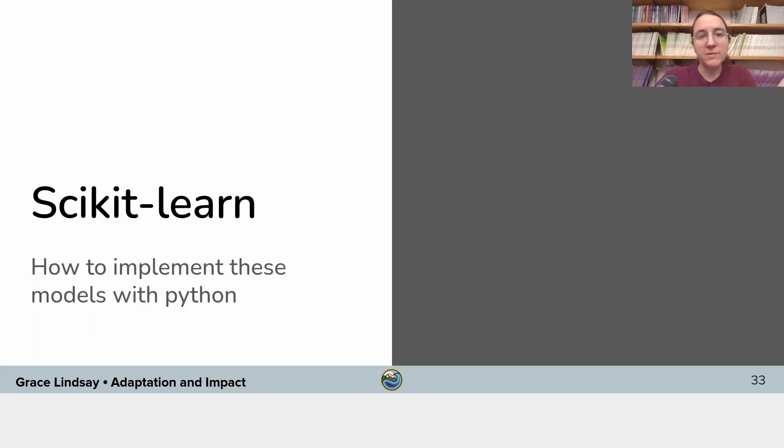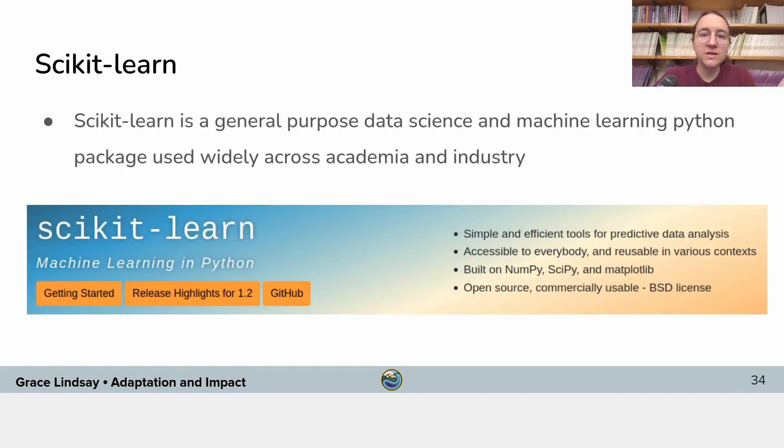So finally, we're going to talk about the practical details of how you're going to train these models. And that's using Scikit-learn. So Scikit-learn is a Python package that's widely used across academia and industry for data science and machine learning. It has a lot of great features. A lot of people have contributed to it. It's a really great resource to know about if you want to do data science and machine learning in any domain.